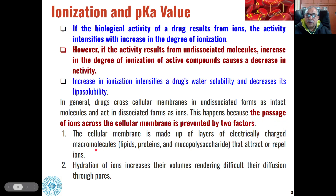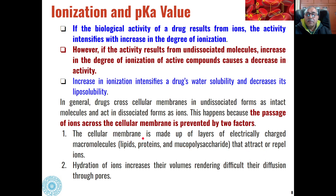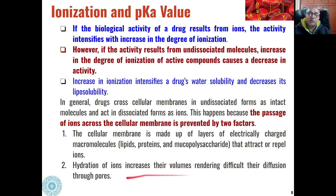Cellular membranes are made up of layers of electrically charged macromolecules like lipids, proteins, and mucopolysaccharides. If the drug is ionized, it will either be attracted or repelled by the cellular membrane. Furthermore, hydration of ions increases their volume, making it difficult for the drug to pass through the pores of the cellular membrane — both factors work against ionization of drugs.